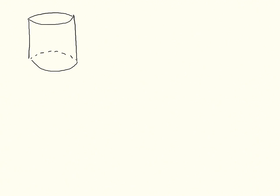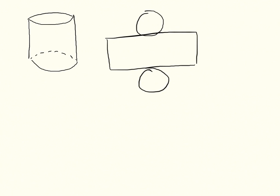Now we're going to move on to cylinders. A cylinder is very similar to a prism. If we laid out its net, we would have our two circular bases. If you were to open it up, you would notice that the lateral face would again be a rectangle. This time, the base of the rectangle is the same as the distance around the circle — the circumference.